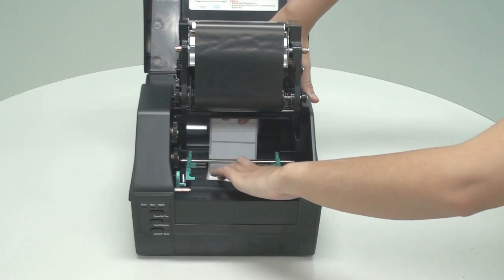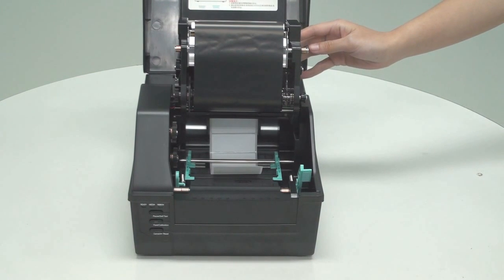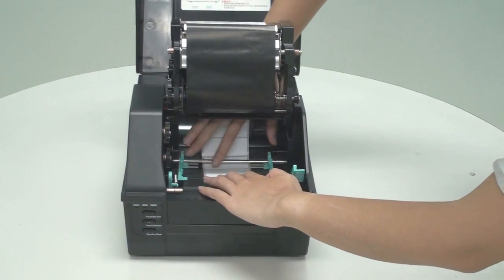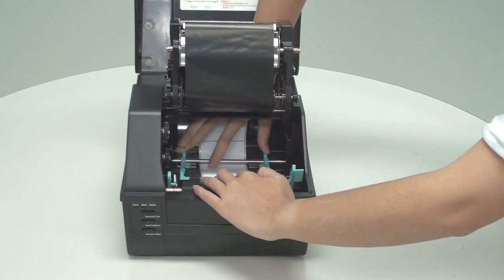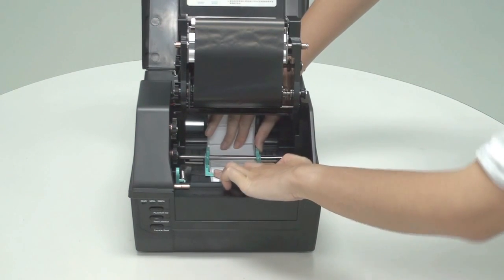Release the printhead module, and use your fingers to push the media under the media guide rod towards the front of the printer. Then, slide the media guides to each edge of the label. Don't squeeze the labels. Make sure labels remain flat and centered.